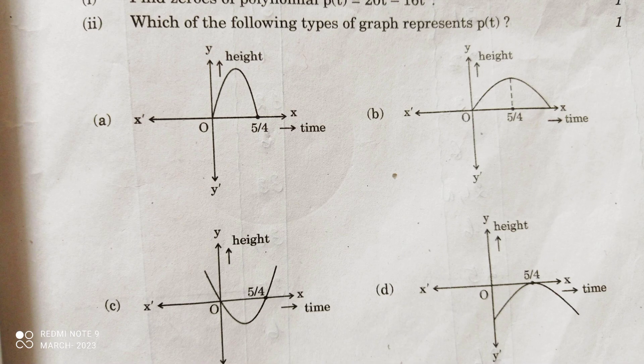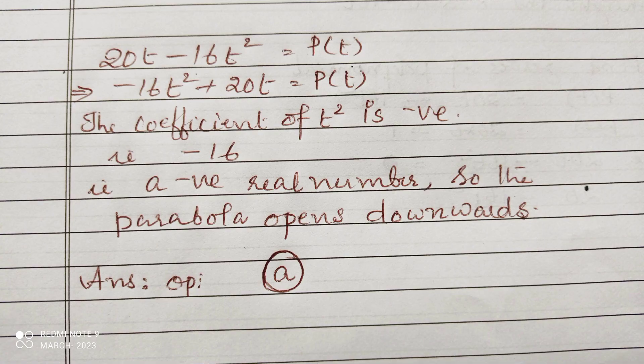Question number 2. Which of the following types of graphs represents p(t)? There are 4 options given. In the first option, the parabola is downward. Second one is also downward. Answer c, parabola upward. Answer d, parabola downward.